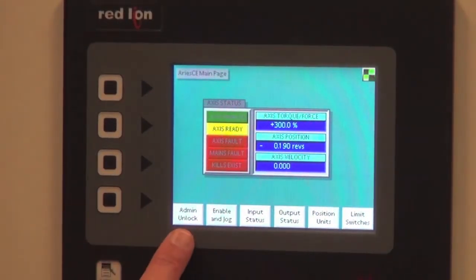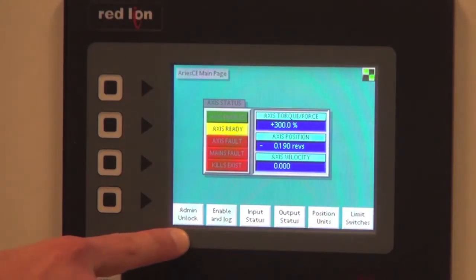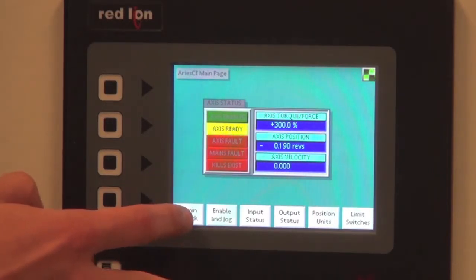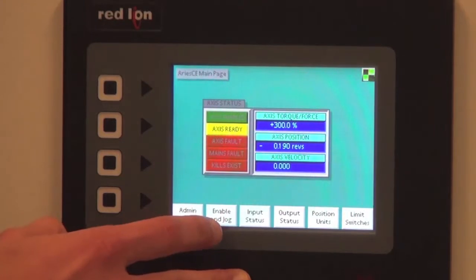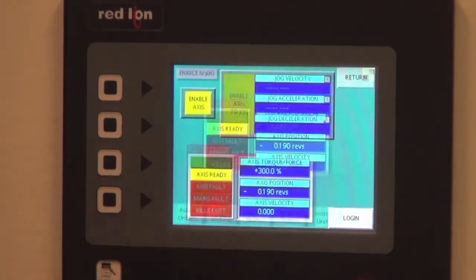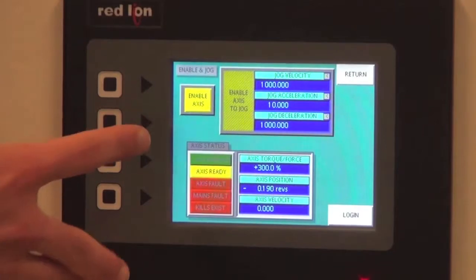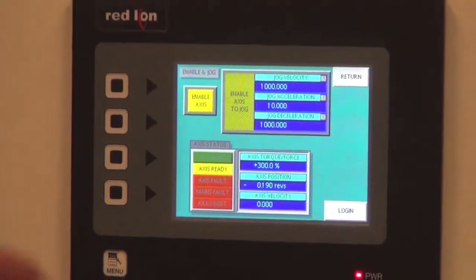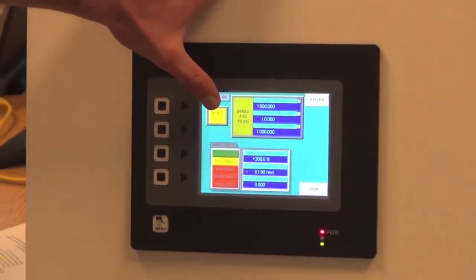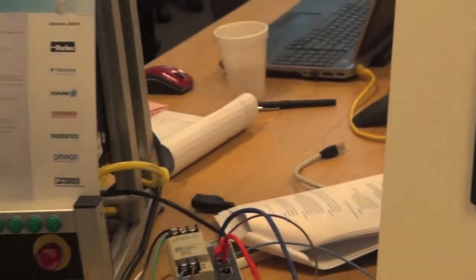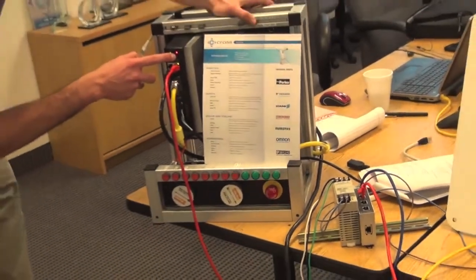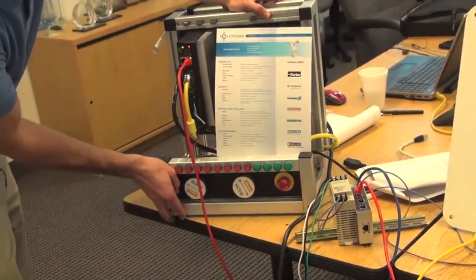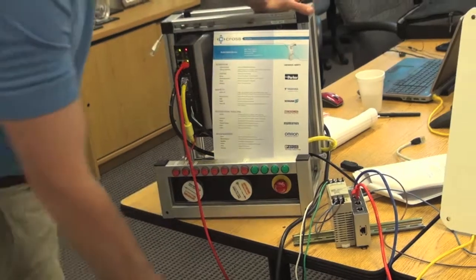On the bottom of the main page you can see the six screens highlighted by these buttons. We've already went to the admin unlock screen. There's the enable and jog screen which will enable us to enable the drive via this button. When we push the enable axis button we will see this light turn green showing that the drive is now enabled and torque is applied to the motor.